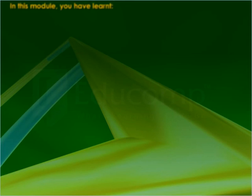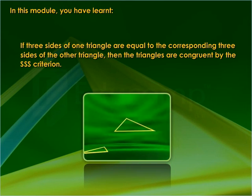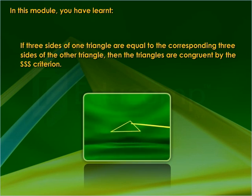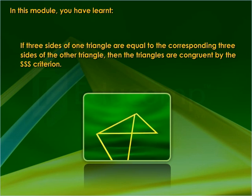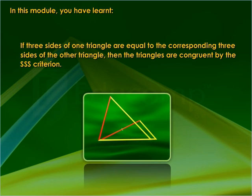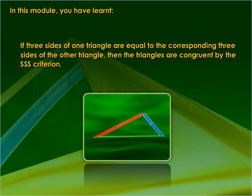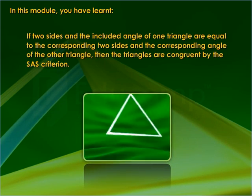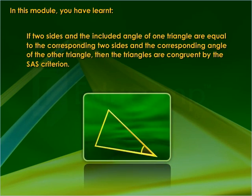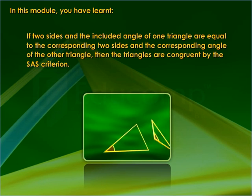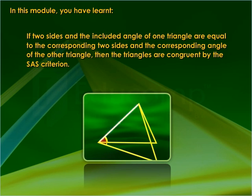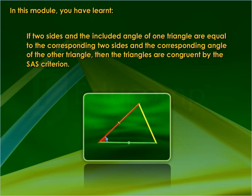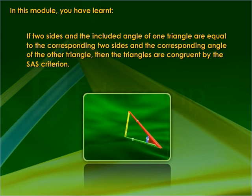In this module you have learned: If three sides of one triangle are equal to the corresponding three sides of the other triangle, then the triangles are congruent by the SSS criterion. If two sides and the included angle of one triangle are equal to the corresponding two sides and the corresponding angle of the other triangle, then the triangles are congruent by the SAS criterion.